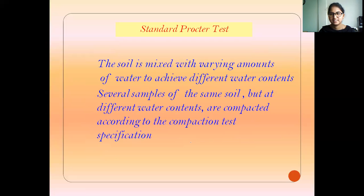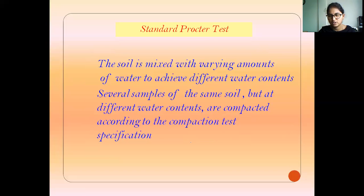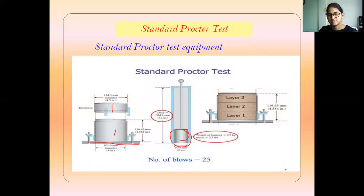In the standard compaction test, the soil is mixed with varying amounts of water content — for example, 2%, 4%, 6%, and 8%, with 2% increments. Take 3 kg of soil sample and add 2% water to it. Some moisture content will already be present in the soil. The soil is then separated into 3 layers for layer-by-layer compaction, covering all around the mold area properly.